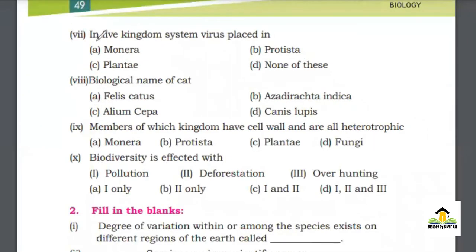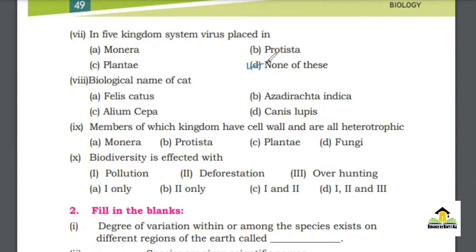MCQ number 7: In the 5 Kingdom system, virus is placed in — A. Monera, B. Protista, C. Plantae, D. None of these. The right answer for this MCQ is None of these.